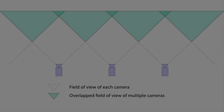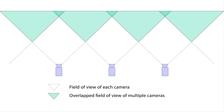Multiple cameras are used to provide occlusion information — areas that can be seen from one viewpoint but not another — and to provide critical 3D information of the scene.